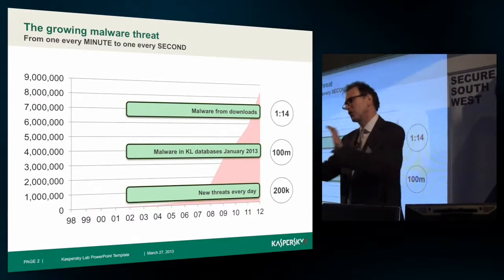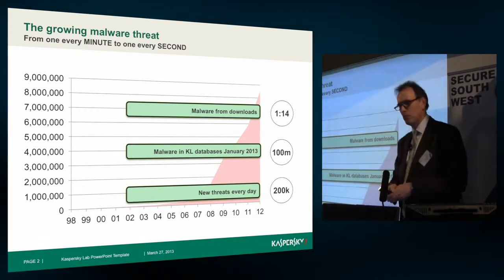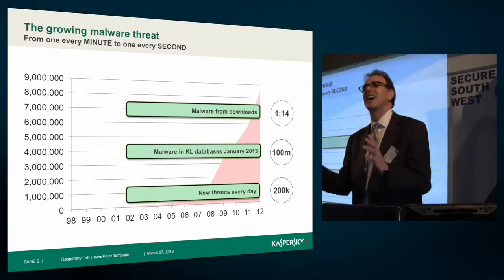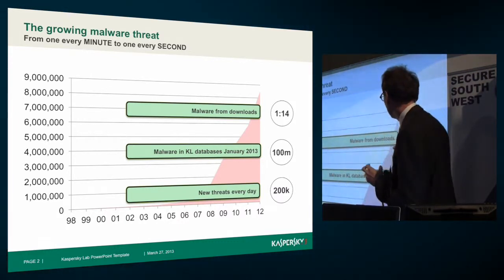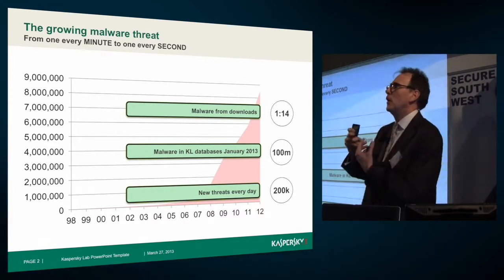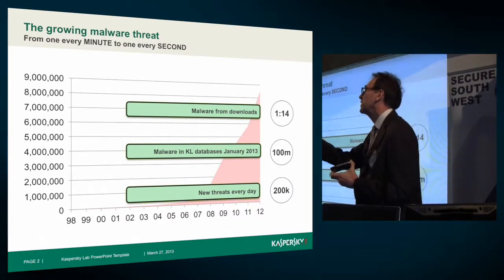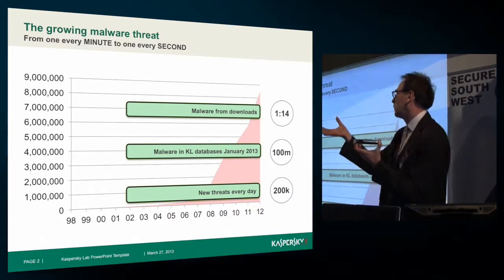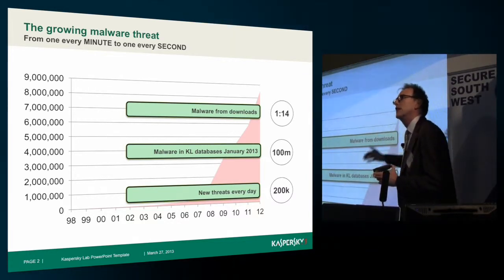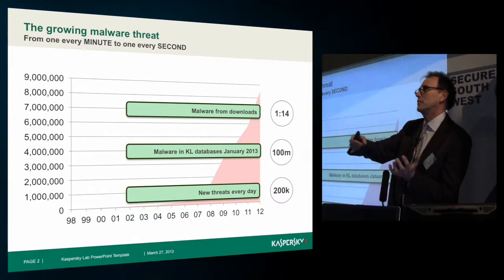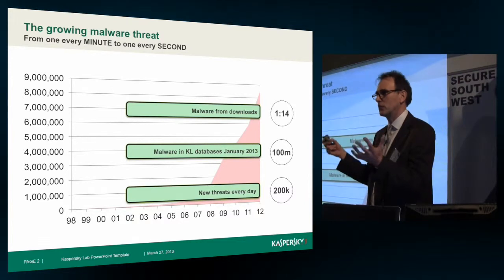First of all, to talk about the threat generally in terms of the numbers: we've got about 9 million signatures in our database currently, quite big numbers. But if you look at the number of unique samples overall, we see about 200,000 each and every day. So that's about 100 million total in the database, and there's obviously a differential between the signatures and the total count of malware.